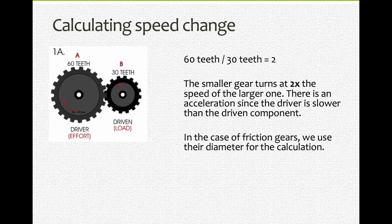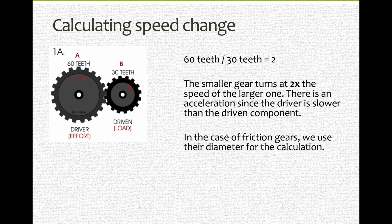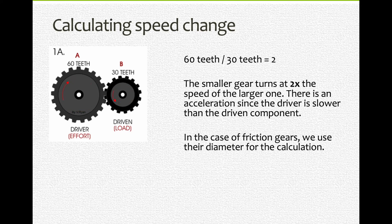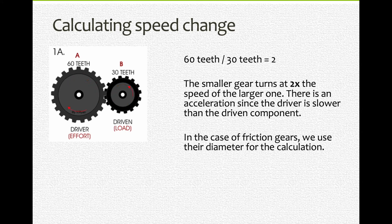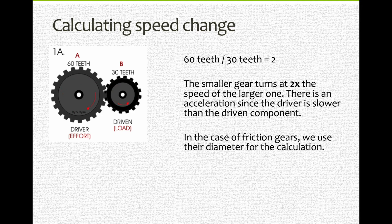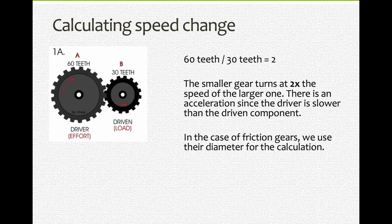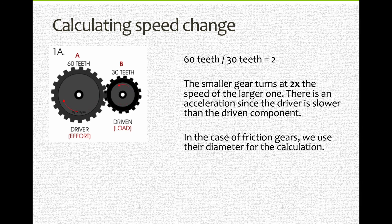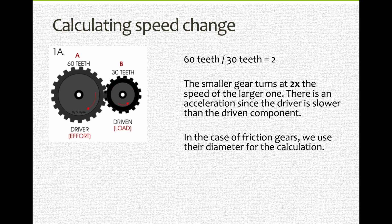And that's it for speed change. Ratio of teeth or ratio of diameter: large is slow, small is faster. You can determine if there's an acceleration or a deceleration when movement goes from the driver to the driven component. If you have questions, please reach out. I'll see you for the next lesson, which will talk about motion transformation systems. Take care!